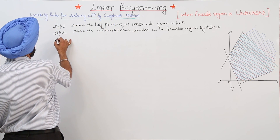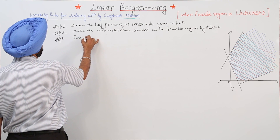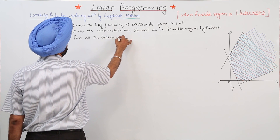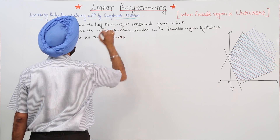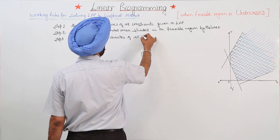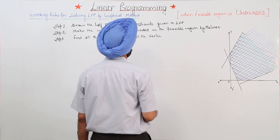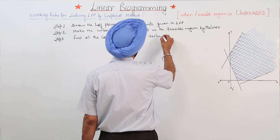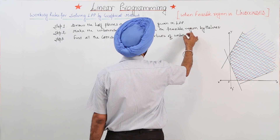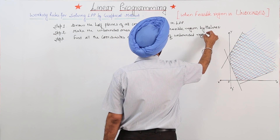Step 3: Find all the coordinates of all the vertices of the unbounded feasible region.